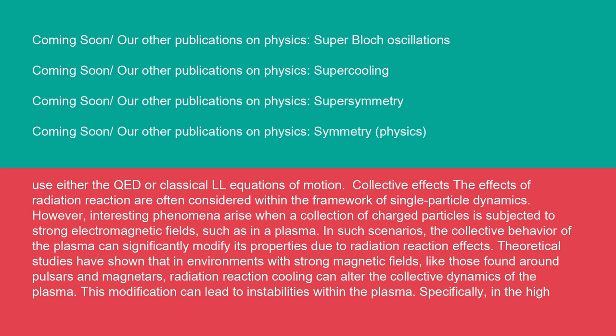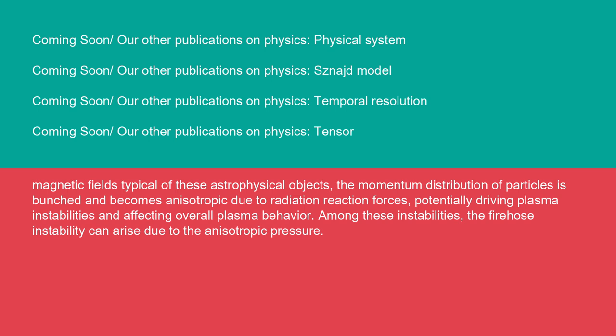Collective effects: the effects of radiation reaction are often considered within the framework of single particle dynamics. However, interesting phenomena arise when a collection of charged particles is subjected to strong electromagnetic fields, such as in a plasma. In such scenarios, the collective behavior of the plasma can significantly modify its properties due to radiation reaction effects. Theoretical studies have shown that in environments with strong magnetic fields, like those found around pulsars and magnetars, radiation reaction cooling can alter the collective dynamics of the plasma. This modification can lead to instabilities within the plasma, specifically in the high magnetic fields typical of these astrophysical objects, the momentum distribution of particles is bunched and becomes anisotropic due to radiation reaction forces, potentially driving plasma instabilities and affecting overall plasma behavior.